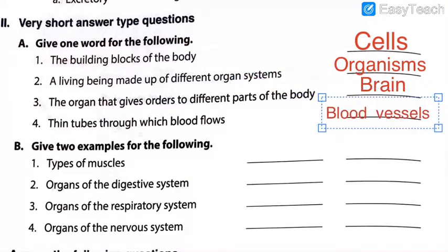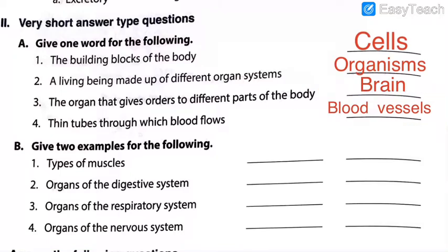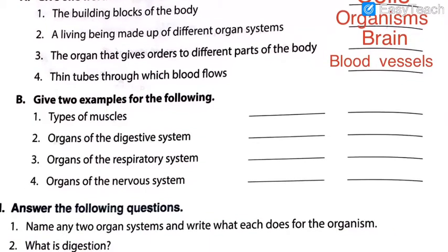So here we have solved give one word answer — there were only 4 answers. I hope you have written them properly. Now coming to question B: give 2 examples for the following. Those writing in the rough notebook, take care to note properly for each and every answer with the correct answer number. Number 1: types of muscles. How many types of muscles have you seen in your textbook?